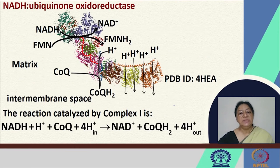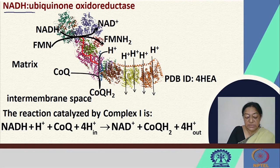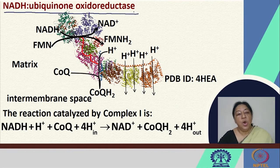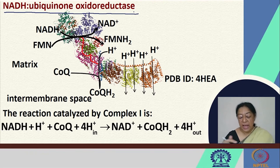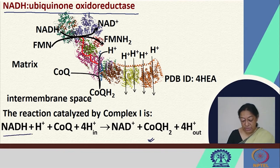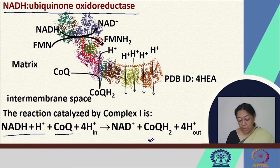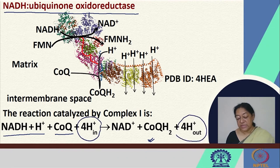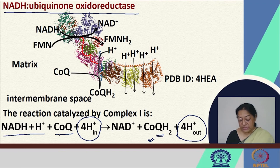In complex 1 — NADH ubiquinone oxidoreductase — the overall reaction has NADH, H+, and coenzyme Q where 4H+ in are taken to 4H+ out into the intermembrane space, and we have a reduction of coenzyme Q to coenzyme QH2.